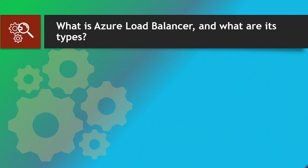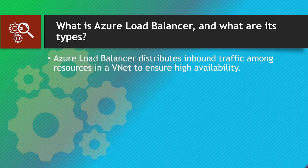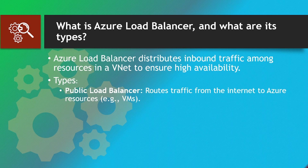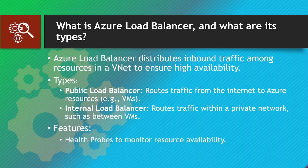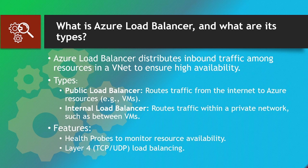Next question: What is Azure Load Balancer and what are its types? Azure Load Balancer distributes inbound traffic among resources in a VNet to ensure high availability. Types: Public Load Balancer — routes traffic from the internet to Azure resources (e.g., VMs). Internal Load Balancer — routes traffic within a private network, such as between VMs. Features include health probes to monitor resource availability and Layer 4 (TCP/UDP) load balancing.